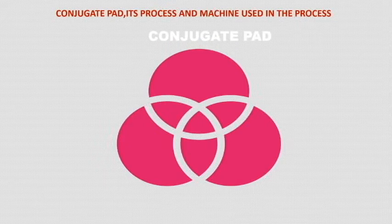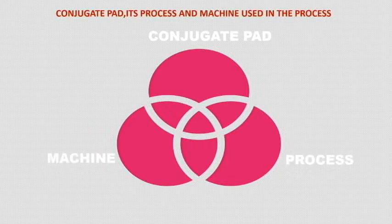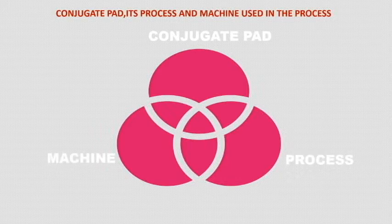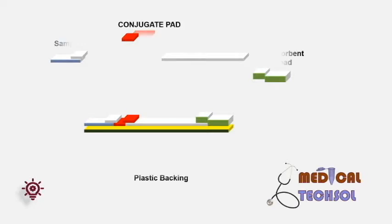Today's video, I am going to discuss about the conjugate pad, its process, and the machines used in these processes. A schematic diagram of the lateral flow assay is shown in the figure. Here we will only focus on the conjugate pad and its process.